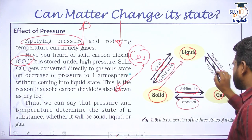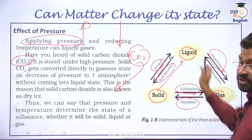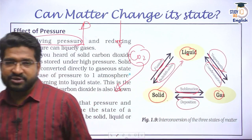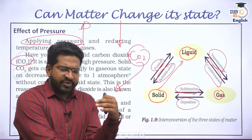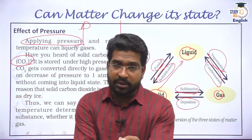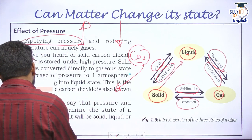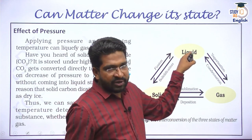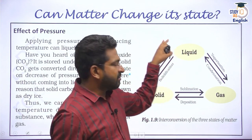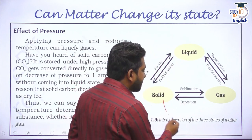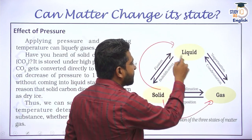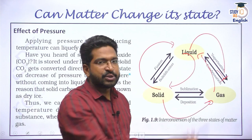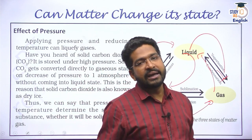Matter can be transformed from solid to liquid, liquid to gas, solid to gas, or vice versa. If I transform from solid to liquid, it is called fusion. From liquid to solid it is called solidification or freezing. From solid to gas directly — by playing around with pressure and temperature — it is called sublimation. From gas to solid it is called deposition. From liquid to gas it is called vaporization, and from gas to liquid it is called condensation. Everything is possible by playing around with pressure and temperature.